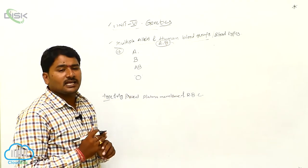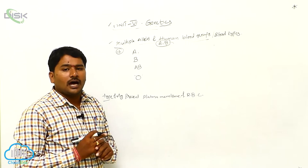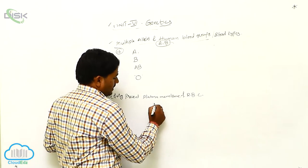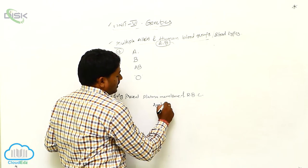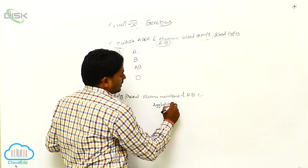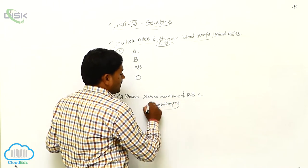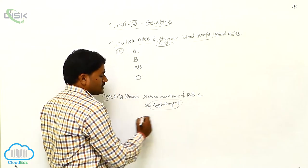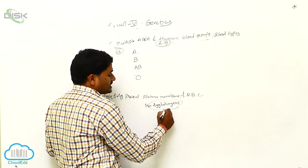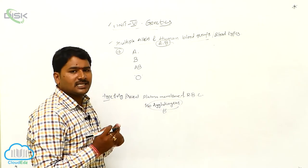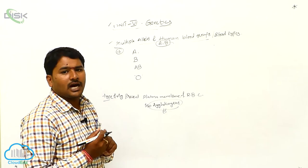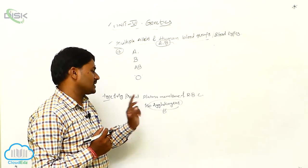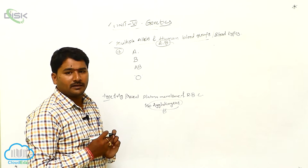Antigens are also known as isoagglutinogens. They are called isoagglutinogens because they cause agglutination in the blood or circulatory system of human beings.